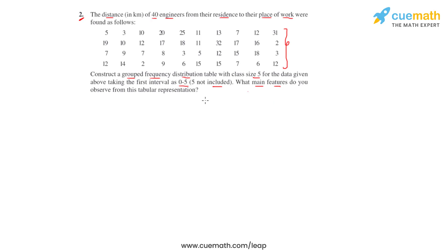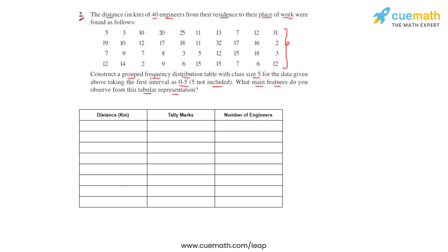To have a tabular representation, let's first have a tabular column. Here we have distance in kilometers, tally marks, and the number of engineers.